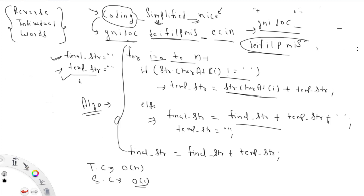We reset the temp string to blank again, then handle 'nice': 'n', 'i', 'c', 'e'. When we reach the last index, the loop ends without hitting another space, so the last reversed word hasn't been added yet. After the for loop, we do: final string = final string + temporary string, so the last word gets added correctly. This is how we reverse individual words.